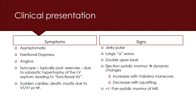Clinical signs of hypertrophic cardiomyopathy include jerky pulse, large A wave of the jugular venous pulse, double apical beat, and an ejection systolic murmur characterized by its changing intensity. For example, its intensity increases with Valsalva maneuver and decreases by squatting, and a pan-systolic murmur of mitral regurgitation due to systolic motion of the anterior mitral leaflet leaving the mitral valve open during systole.